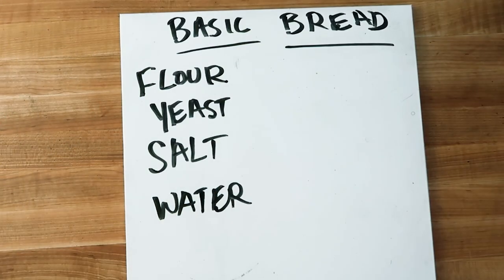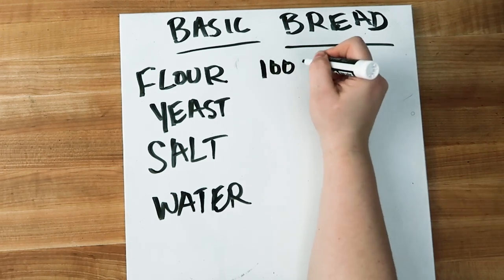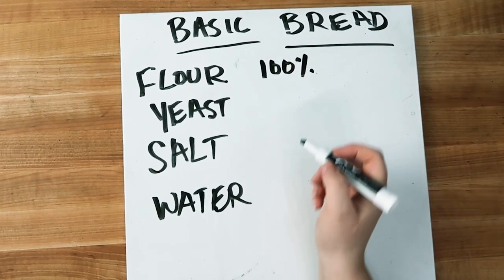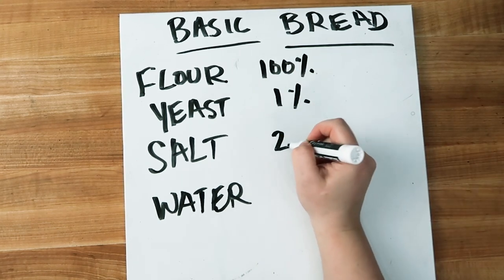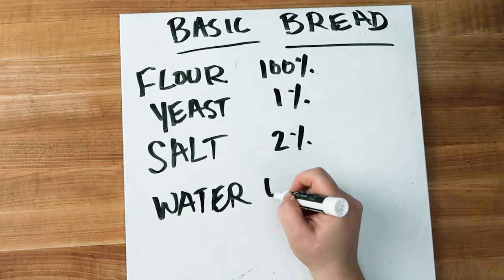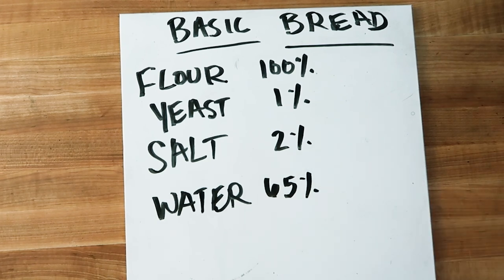Now let's look at the formula going the other way — where we are only given the percentages and need to come up with the amounts to use in our recipe. Flour is always set at 100 percent. In this formula our yeast is still at 1 percent and our salt is at 2 percent, as those are both really standard amounts for a bread recipe, but this time our water is at 65 percent rather than 70 percent. So we know this dough is going to be a little bit drier than the last dough.